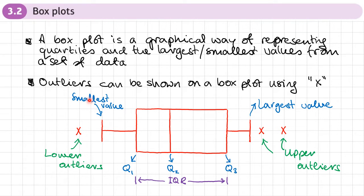This line here represents the smallest value. This line here represents the largest value. All of this will be drawn against the scale. Lower quartile here Q1, upper quartile here, and the median Q2 in the middle. The width of this box here is going to be the interquartile range, Q3 minus Q1.